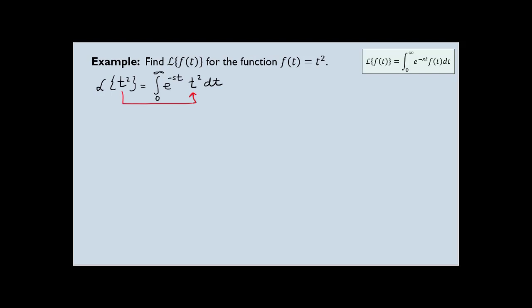And then I have to write down my function, so t squared dt. That's where I place my function t squared. We know that to evaluate an improper integral, we change that upper limit from infinity to a variable — let's use b — so it's from 0 to b. And then we set up a limit with b approaching infinity. So it's the limit as b approaches infinity of the integral from 0 to b of e to the power negative st times t squared dt. I will focus on evaluating this integral first, and then once I'm done, I will put everything back.